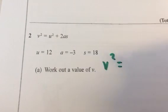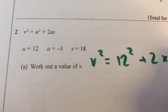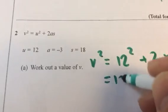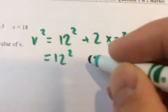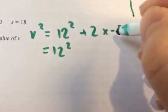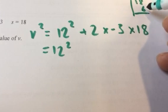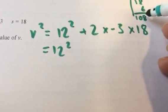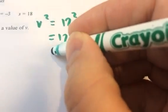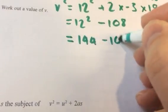So v squared equals 12 squared plus 2 times minus 3 times 18. I'll just quickly do some sums there. So 2 times 3 is 6, 18 times 6 is 48, plus 60 is 108. So 12 squared minus 108, and we know that 12 squared is 144 minus 108.